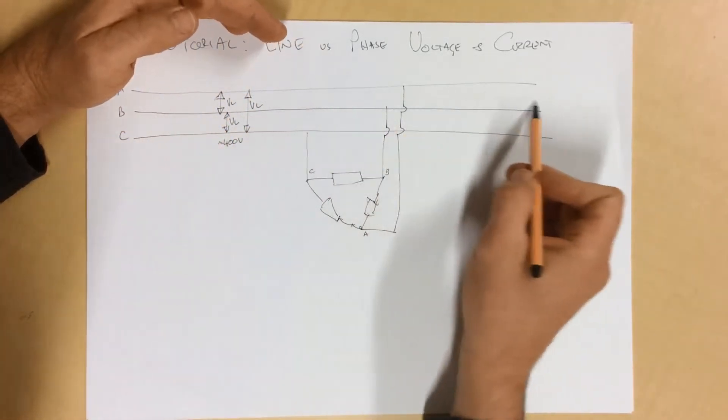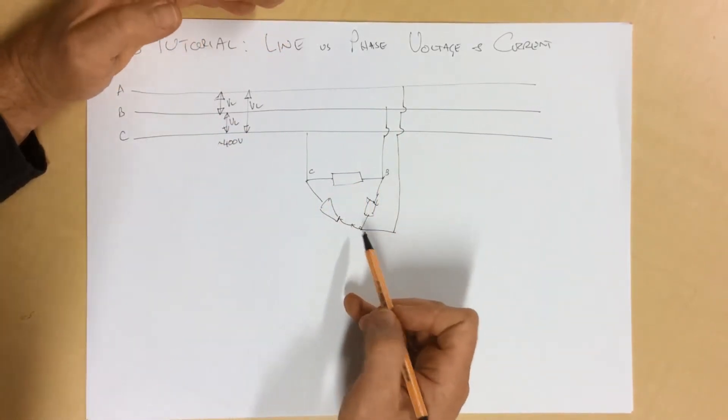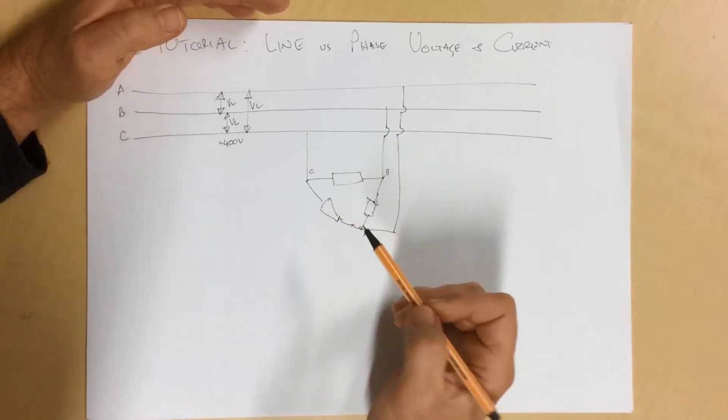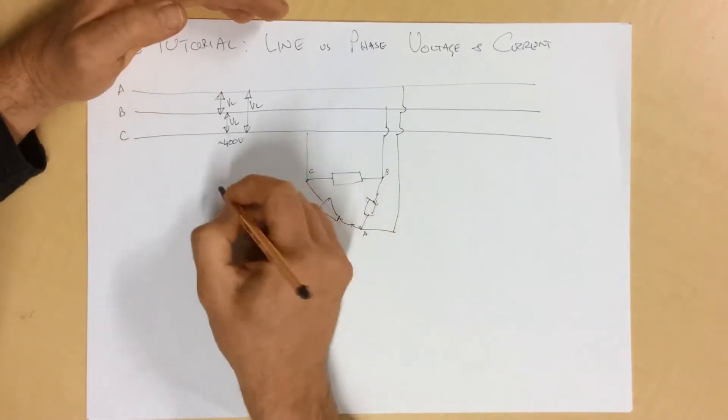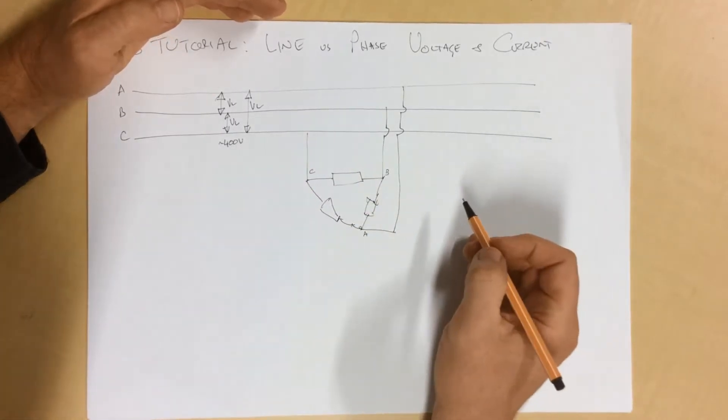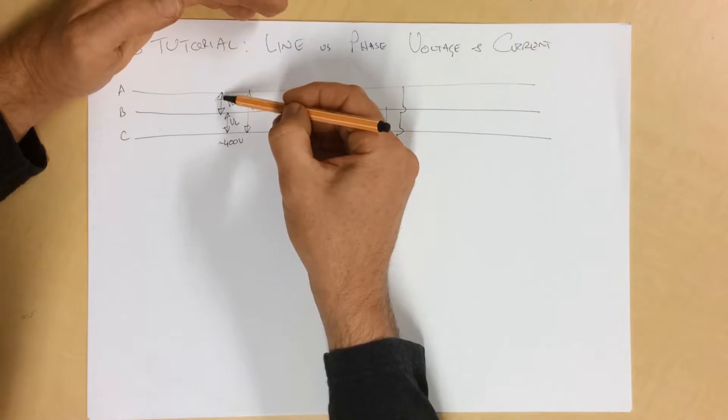Now, so this is our transmission line. This is our power system, and then this is, this could be considered a load. So, maybe a machine or something like that, maybe a three-phase machine. We'll run with that, we'll call it a three-phase machine.